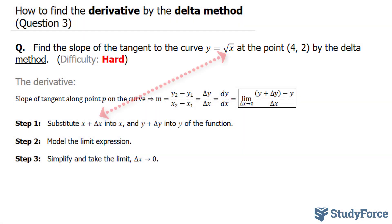In step number 1, they want us to substitute x plus delta x into x, and y plus delta y into the y part of the function. So this part becomes y plus delta y, and this part becomes the square root of x plus delta x.